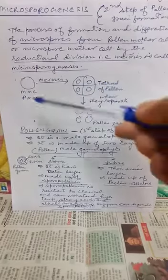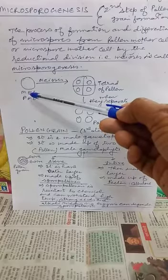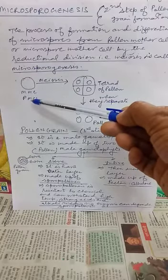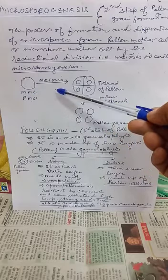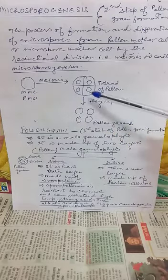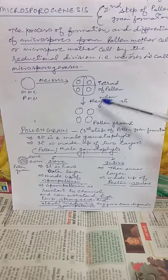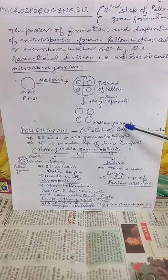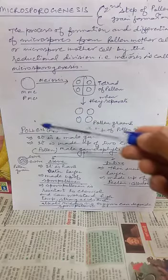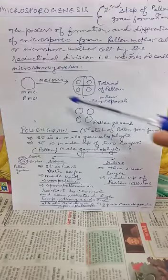You can understand this with the help of a diagram. This is the microspore mother cell, or pollen mother cell, which undergoes meiosis and produces a tetrad of pollen. This tetrad of pollen gets dehydrated and separates, giving rise to pollen grains. This is the process of microsporogenesis.